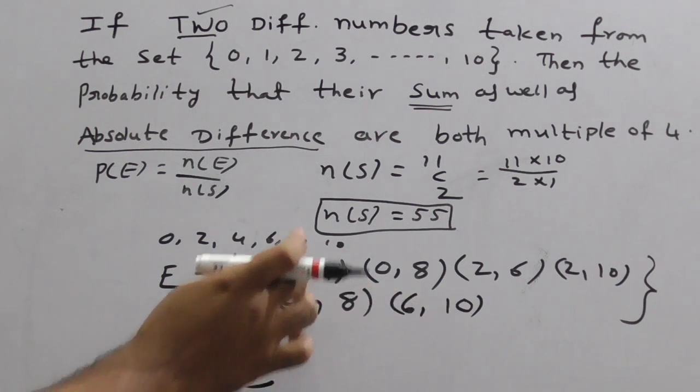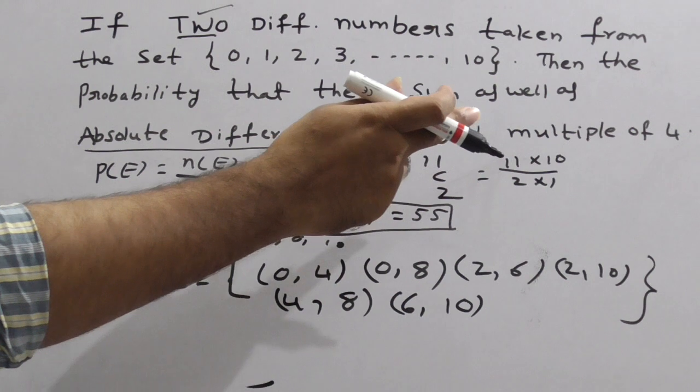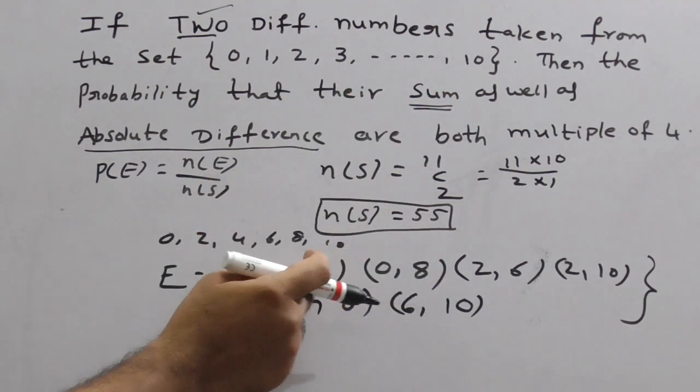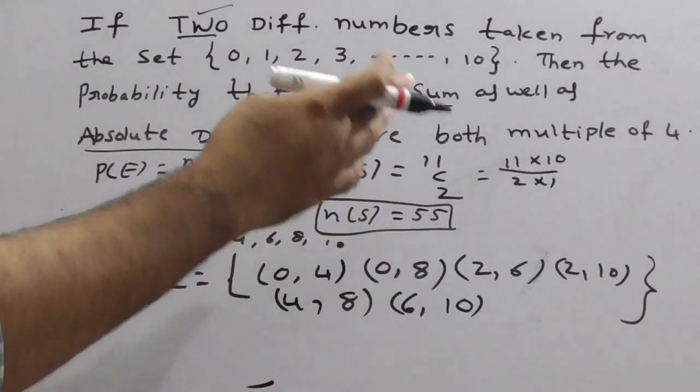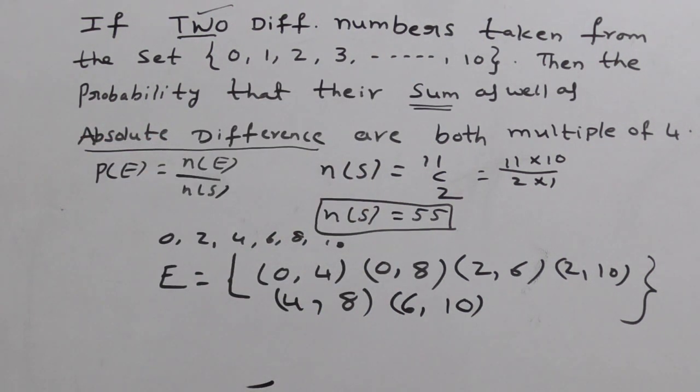Sum should be, the sum of all numbers, all these two given, multiple of 4. And absolute difference also, we get multiple of 4 only.